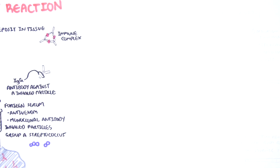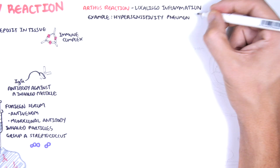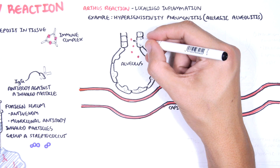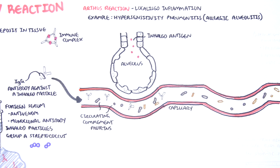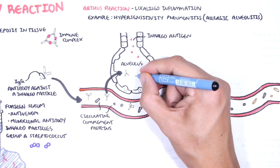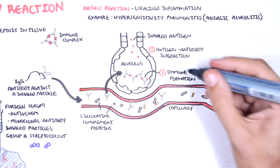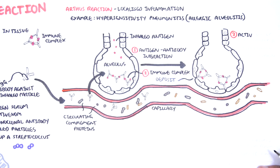A typical type 3 hypersensitivity reaction is the Arthus reaction — the inflammation caused by deposition of immune complexes at a localized site. An example is hypersensitivity pneumonitis, where workers such as farmers, woodworkers, and wheat millers continuously inhale particles, causing the body to develop IgG antibodies against those particles. On subsequent inhalation, antibodies bind to the inhaled antigens, form immune complexes, which then deposit into the tissues of the lungs.